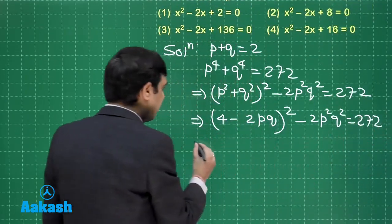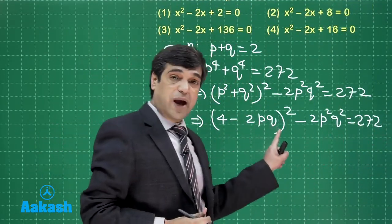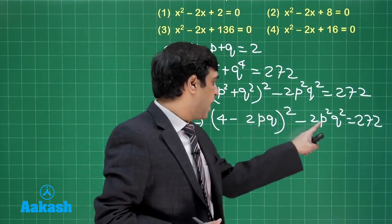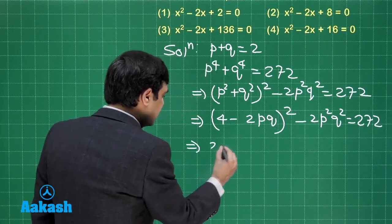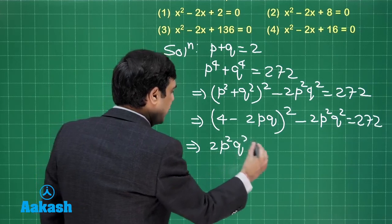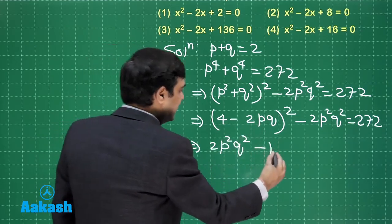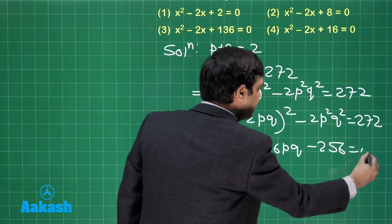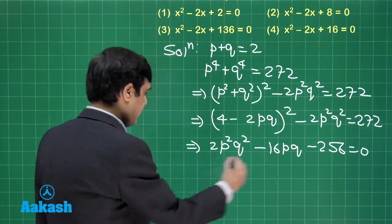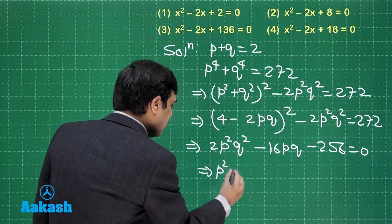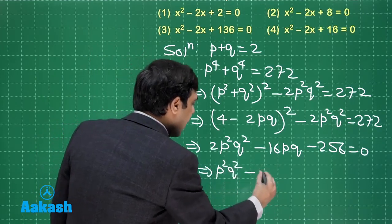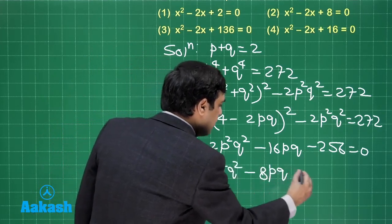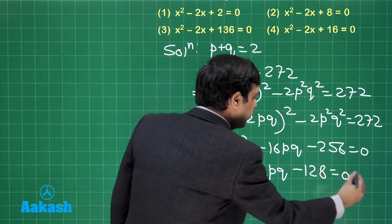p plus q meaning 2 so it is 4 minus 2pq whole square minus 2p²q² is equal to 272. Now moving forward we can whole square we will get 4p²q² minus 2p²q² that is 2p²q² minus 16pq minus 256 taking this 272 on the left hand side.